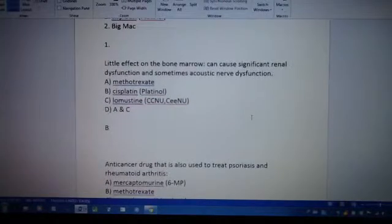Next one. Which has little effect on bone marrow, can cause significant renal dysfunction, and sometimes acoustic nerve dysfunction? A, methotrexate, B, cisplatin, C, lomustine, and the answer is B, cisplatin. If you can remember the chemotoxyman, that's in first aid too. You can remember the placement of the ears in a C shape and also around the kidneys to know what these drugs can cause. So, in this case, cisplatin is causing renal dysfunction and acoustic nerve dysfunction.